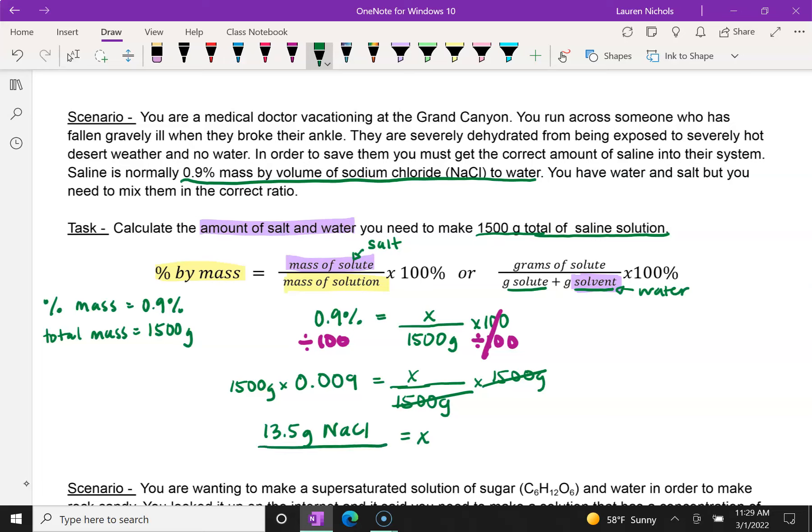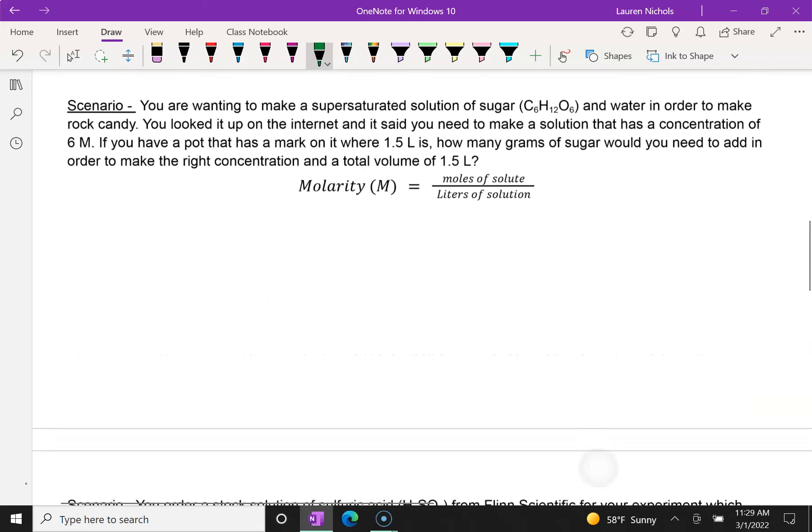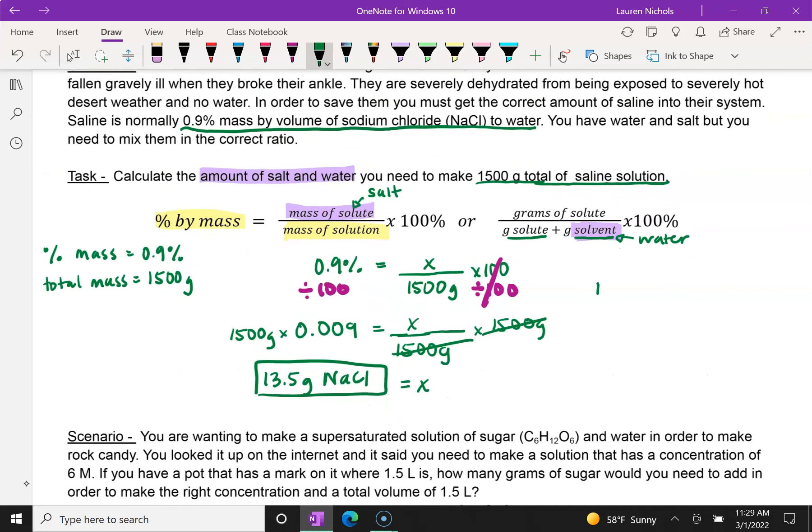So we know this part. We also know that they wanted to know the amount of water. Well, if we have 1500 grams total, and it's our water and our salt, right, this is our total saline, and saline is both salt and water. We know that if our salt is 13.5 grams, that the water must be the rest. So 1500 minus 13.5 gives us 1,486.5 grams of water. And then we have 13.5 grams of NaCl. So that's actually both of our answers together.